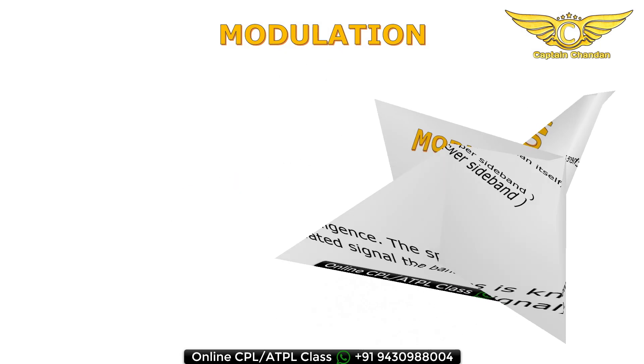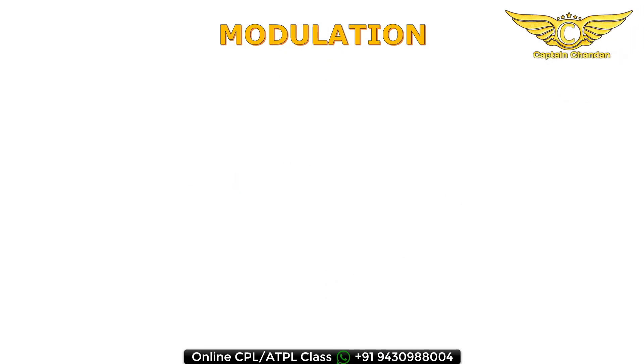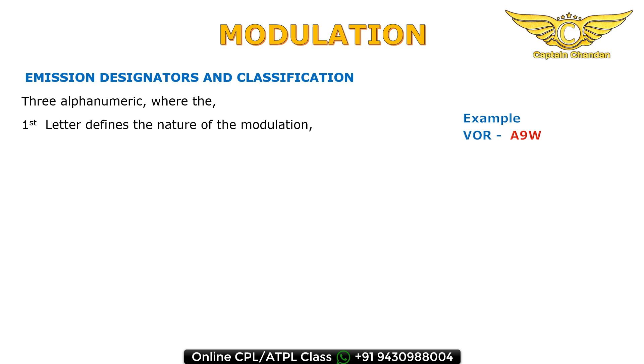Emission designator and classification: three alphanumerical characters where the first letter defines the nature of modulation. Example, in A9W: A is nature of modulation, 9 is nature of signal used for the modulating, and W is the information carried. Kindly remember those emissions, important for DGCA CPL and ATPL pilot exam.